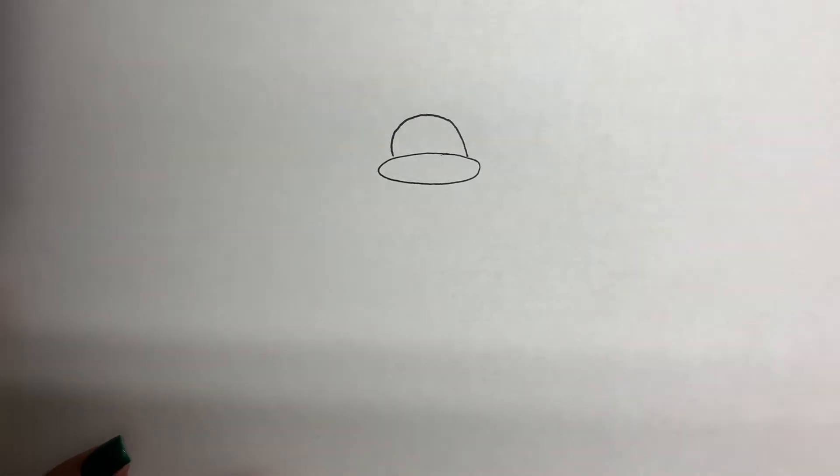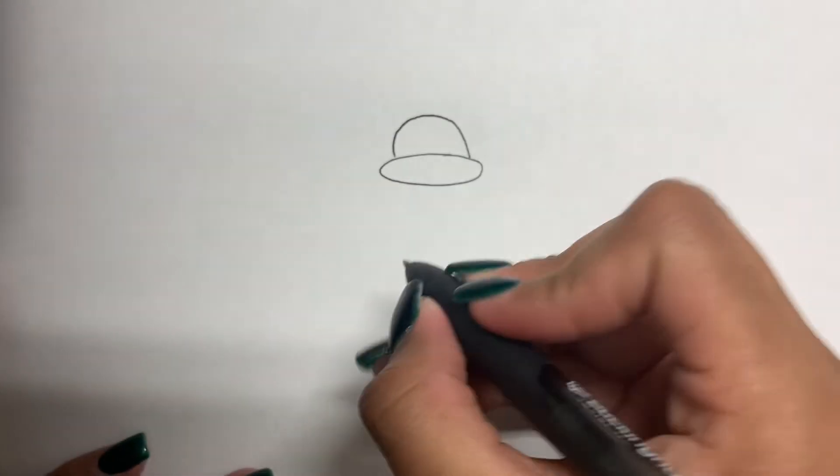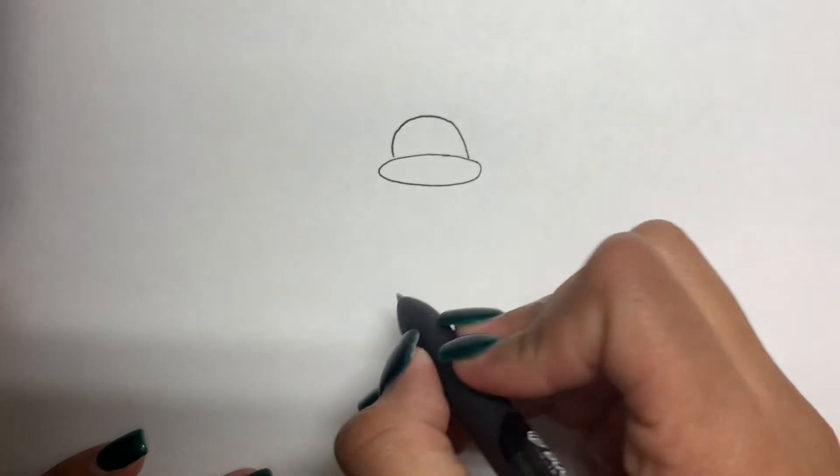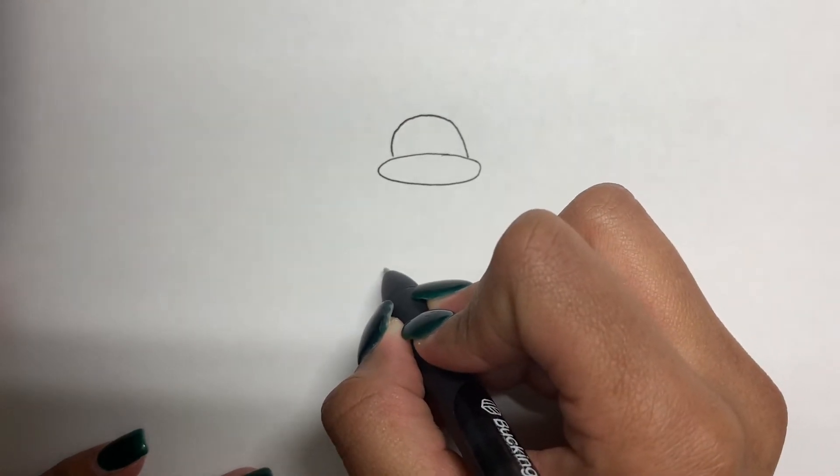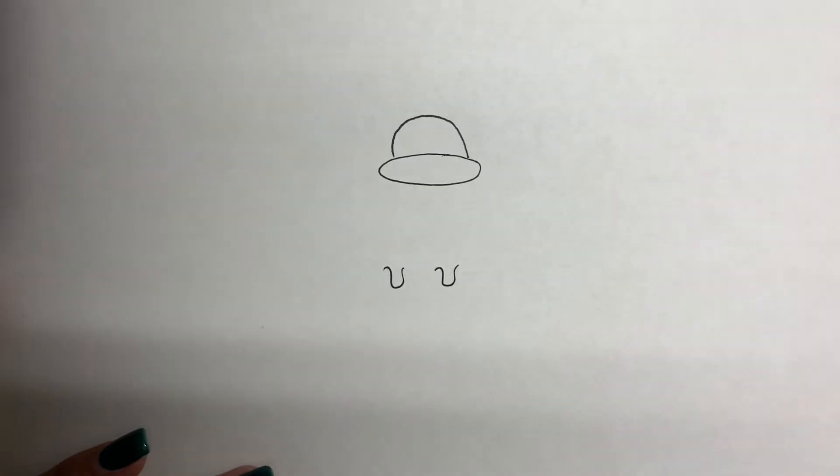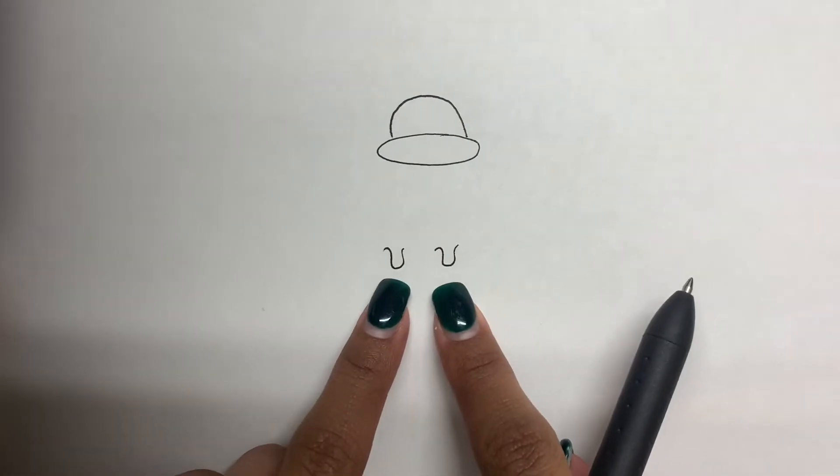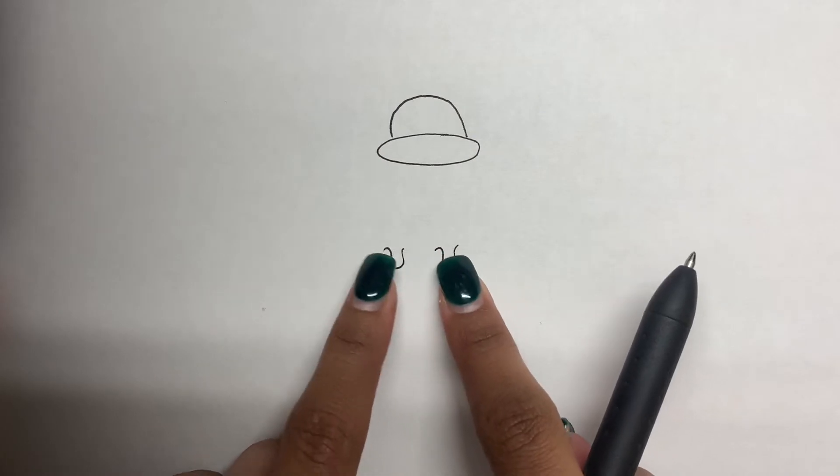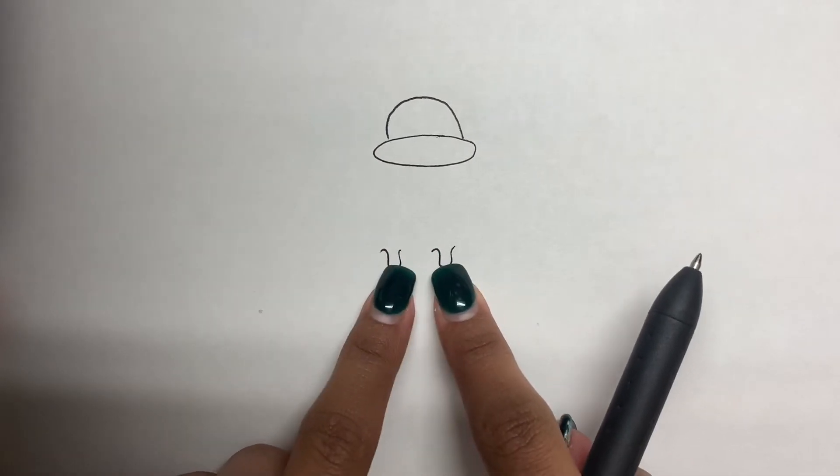The third step is going to be to draw the paws. So about an inch down from, this is going to be the head, so an inch down from the head we just drew, we're going to draw the paws. So for this, we're going to do this kind of squiggle shape, or you can think of it as an open curved teardrop shape. So we're going to make two of them right down here, leaving the ends open and having a curve at the bottom.